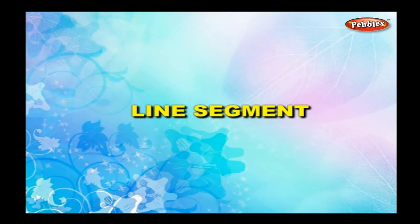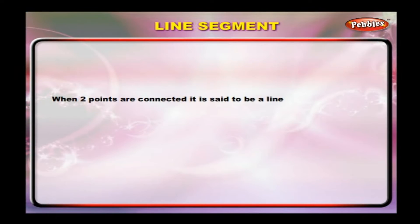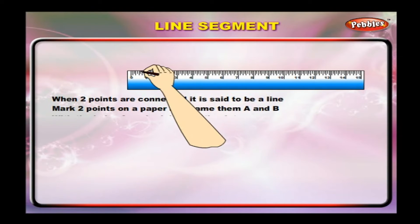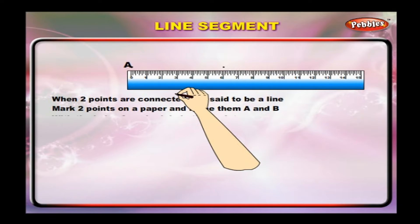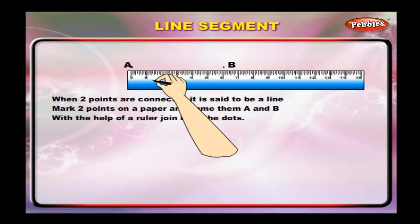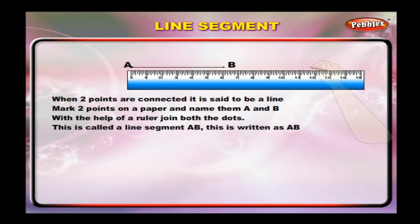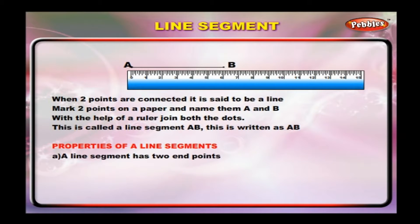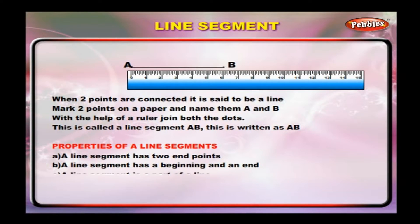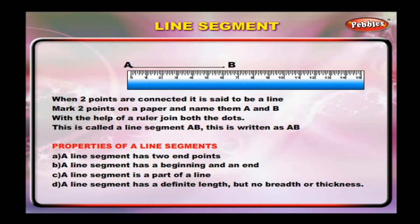Line Segment. When two points are connected, it is said to be a line segment. Mark two points on a paper and name them A and B. With the help of a ruler, join both the dots. This is called a line segment AB, written as AB. A line segment has two end points, a beginning and an end. It is a part of a line and has a definite length but no breadth or thickness.